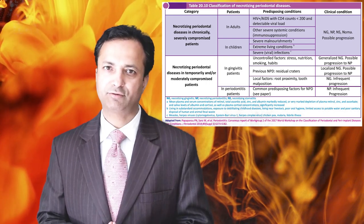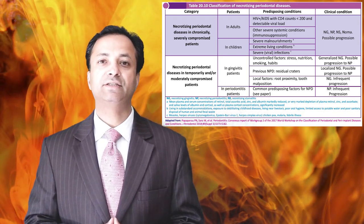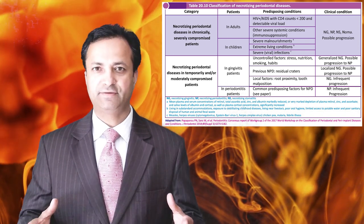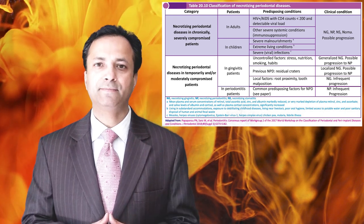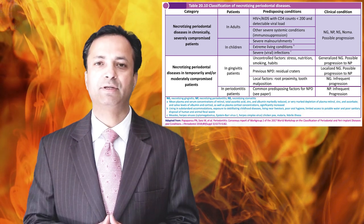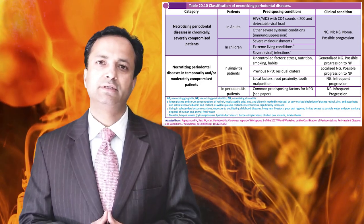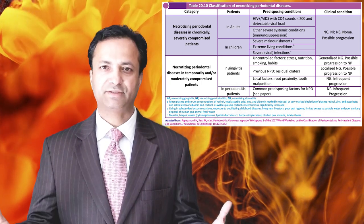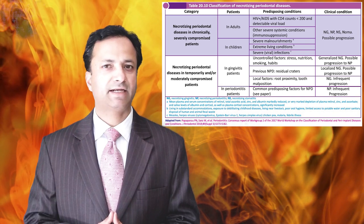Coming to necrotizing periodontal diseases, two situations have been described. First is in severely immunocompromised patients — in adults this may be due to HIV infection or any other reason leading to severe immunodepression; in children, severe immunodepression may be due to severe malnutrition, extreme living conditions, or infections like herpes simplex, measles, or malaria. The second category describes temporarily immunocompromised patients, where factors like stress, smoking, and tooth-related factors like crowding or close root approximation have been described.